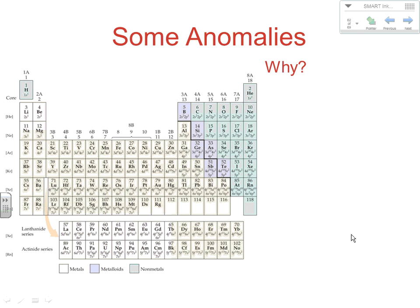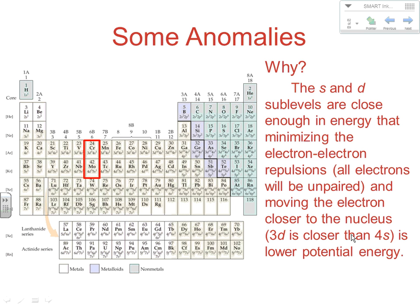The s and d sub-levels are close in energy, so it's not a big energy move. The minimizing of electron repulsions — the energy savings we get — is greater than the energy spent to move the electron from the 4s to the 3d, or in molybdenum's case from the 5s to the 4d. Also, the 3d is actually closer to the nucleus than the 4s, so it's lower in potential energy anyway.